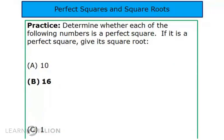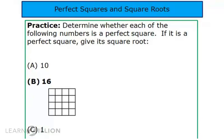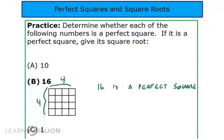Let's try the next one: sixteen. Is sixteen a perfect square? Yes, you are correct, because I could take sixteen one-by-one unit squares and form them into a four-by-four square. Therefore, sixteen is a perfect square and its square root is four.